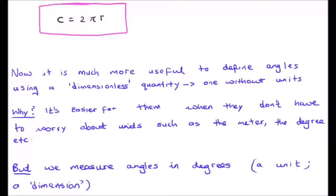But at the moment, just let's accept that a dimensionless angle is something which is useful. As I said, we currently measure angles in degrees. And degrees, of course, is a unit. It is a dimension. So let's see if we can somehow define a dimensionless angle.